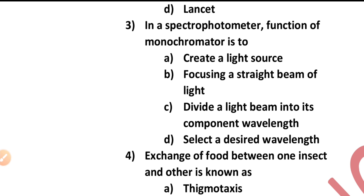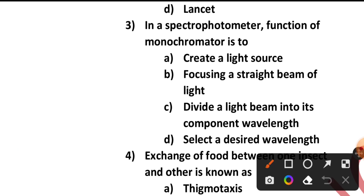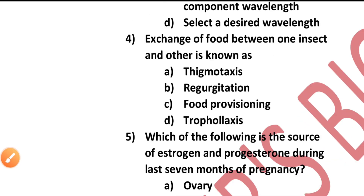Question number three: In a spectrophotometer, the function of the monochromator is? A spectrophotometer is the instrument which measures the amount of photons — that is the intensity of light — which is absorbed after it passes through the sample solution. The function of the monochromator is to select a desired wavelength. Option D is the correct answer.